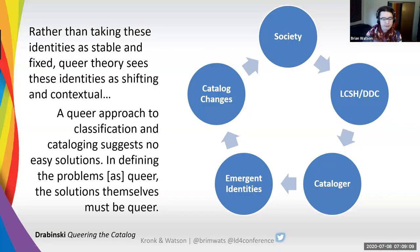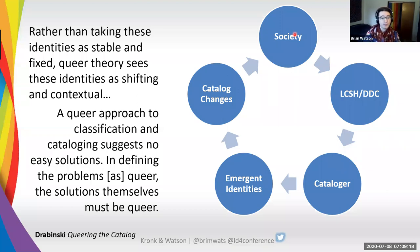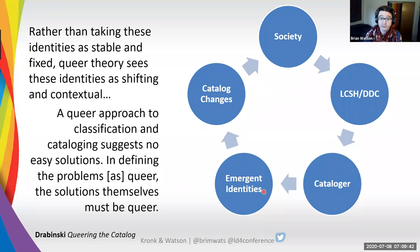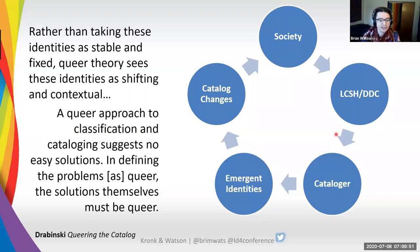Generally, groups in society have been named by people in authority with the power to name — historically rich white men, but now think doctors, psychologists, or sexologists. That term is then imported into language organization systems like Library of Congress subject headings and Dewey Decimal Classification. Cataloging staff apply those terms to books and other materials. Then new identities come forth, categories become emergent, they develop new communities and receive recognition from catalogers, the catalog changes, and the whole process begins again.